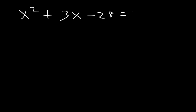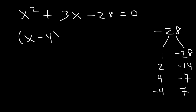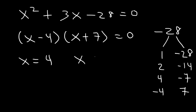Let's try another one like that. Let's say if we have x squared plus 3x minus 28. What two numbers multiply to negative 28 but add to 3? If we divide 28 by 4, we get 7. So 4 and negative 7 differ by 3; if we add them it's negative 3, so we need to change the sign. It's going to be x minus 4 times x plus 7, which means x is equal to positive 4 and negative 7.